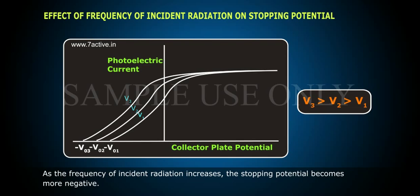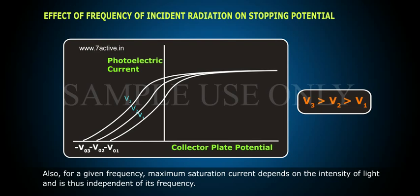As the frequency of incident radiation increases, the stopping potential becomes more negative. Also, for a given frequency, maximum saturation current depends on the intensity of light and is thus independent of its frequency.